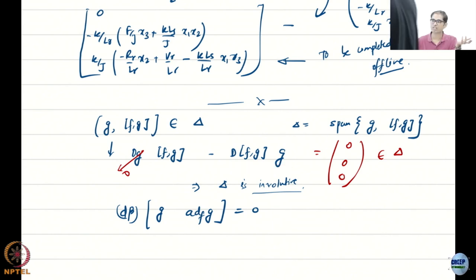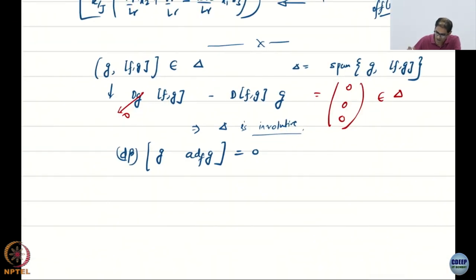And that is pretty straightforward, turned out to be zero vector, so you have involutivity. Now we have by Frobenius theorem that this is in fact completely integrable. So therefore, we have some output beta for which you have d beta multiplied by these terms of the distribution to be zero.